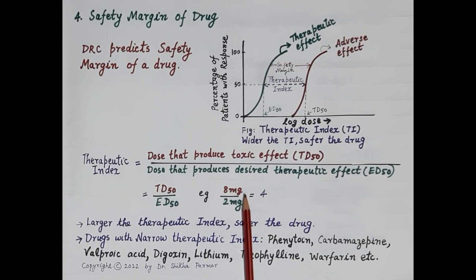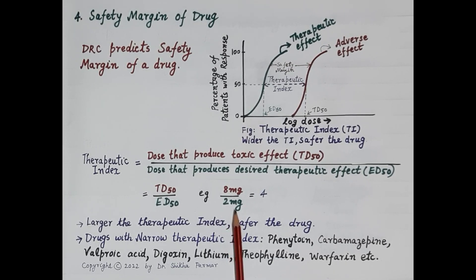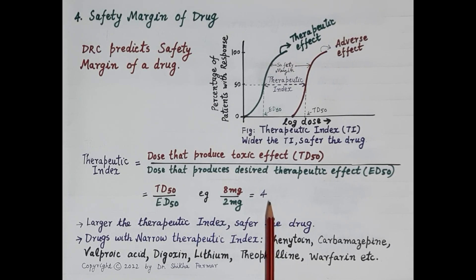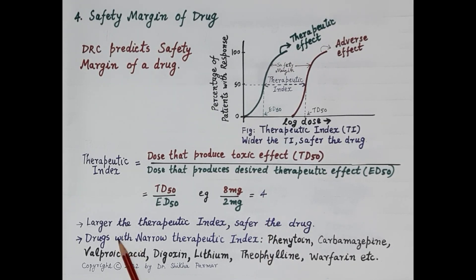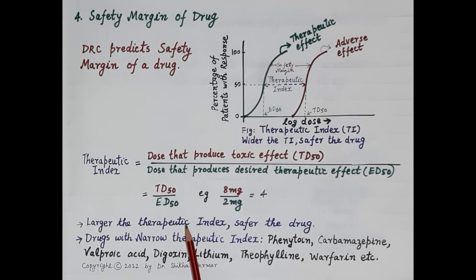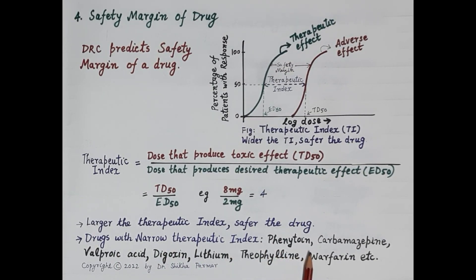If the difference between TD50 and ED50 is small, a slight increase in the dose that produces the therapeutic effect can cause toxicity. Larger therapeutic index means a safer drug; a narrower therapeutic index means a smaller safety margin and the drug requires continuous monitoring. Examples of drugs with a narrow therapeutic index that require continuous monitoring include phenytoin, carbamazepine, valproic acid (anti-epileptic drugs), digoxin, lithium, theophylline, and warfarin.